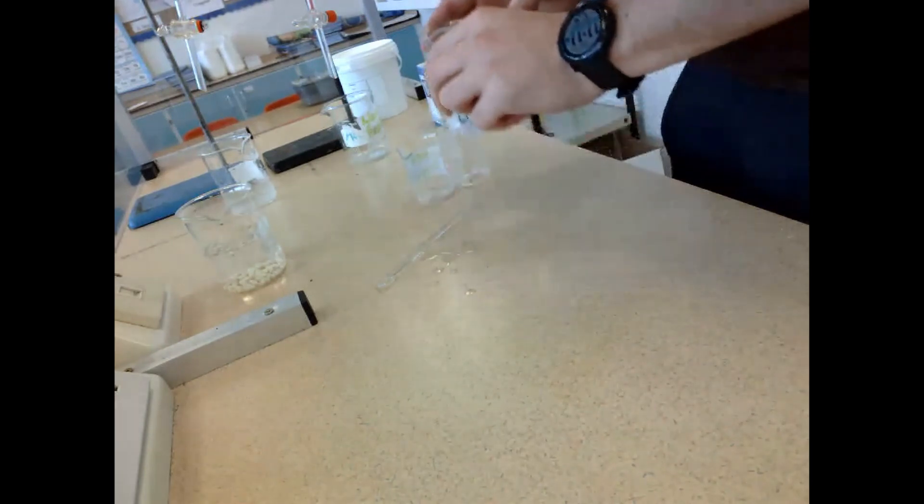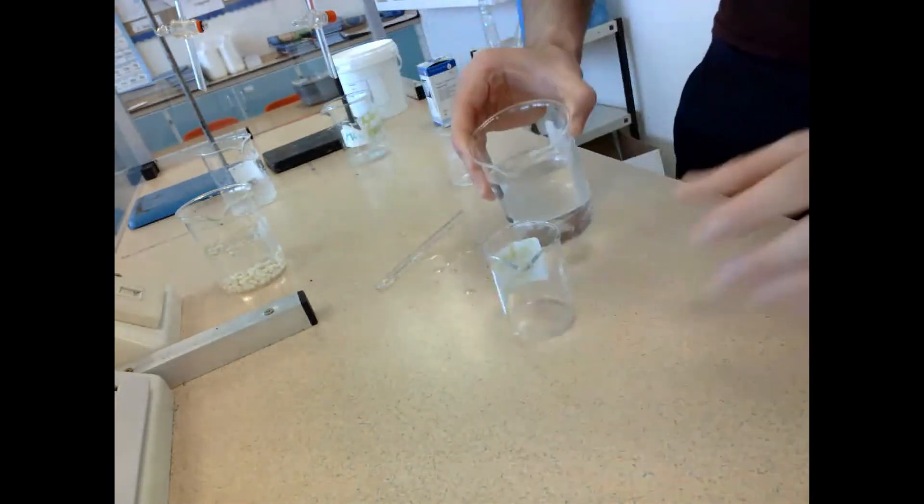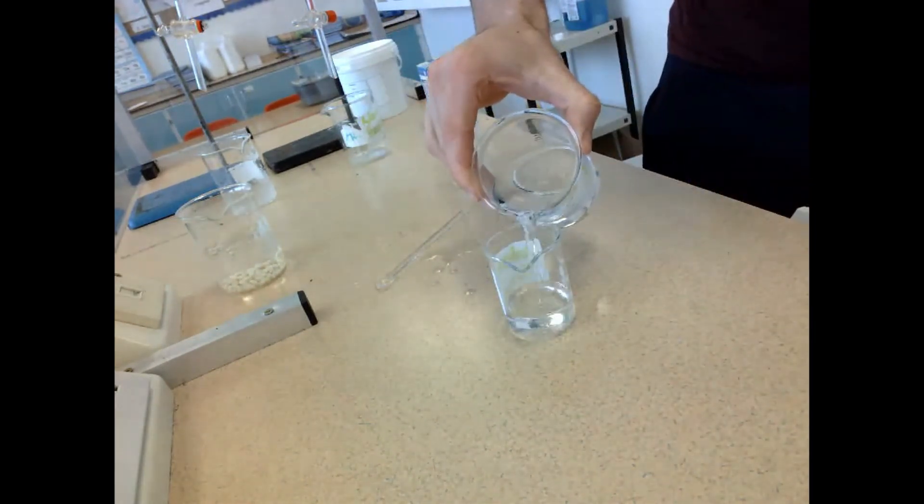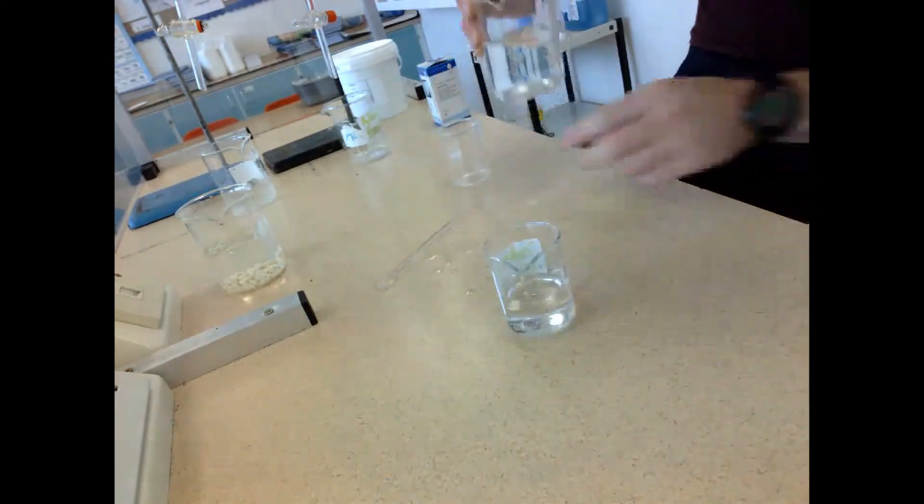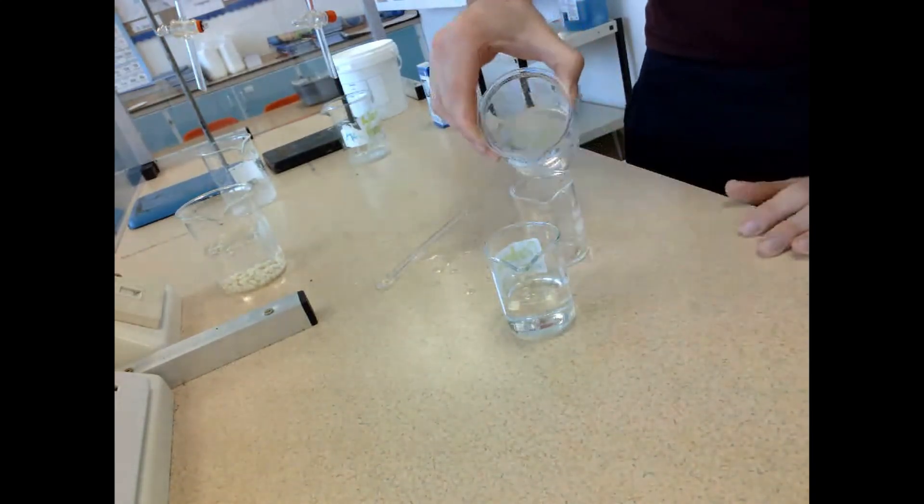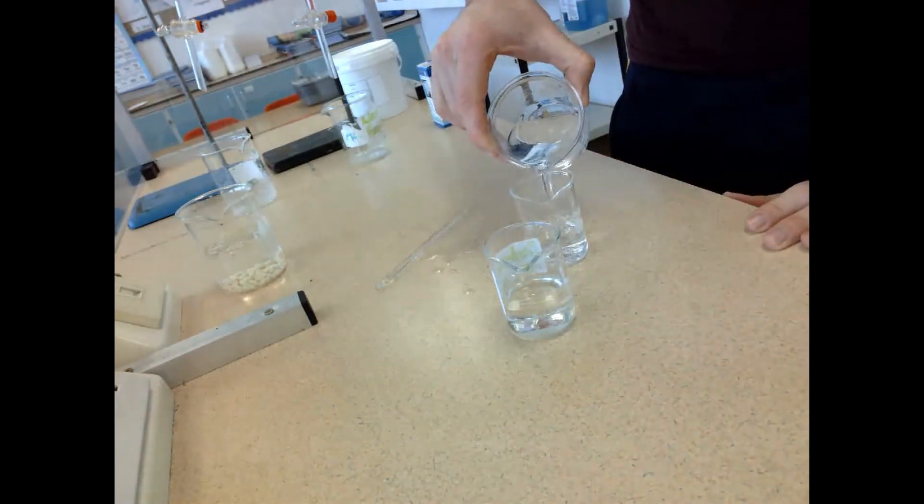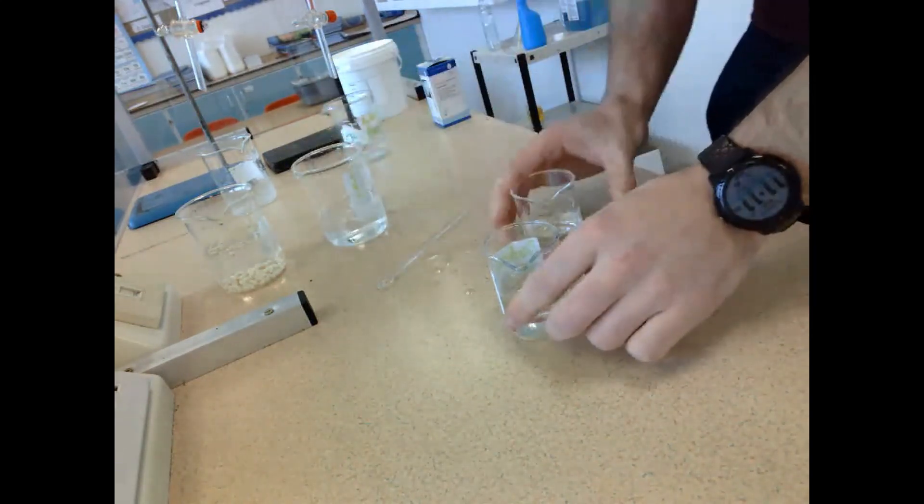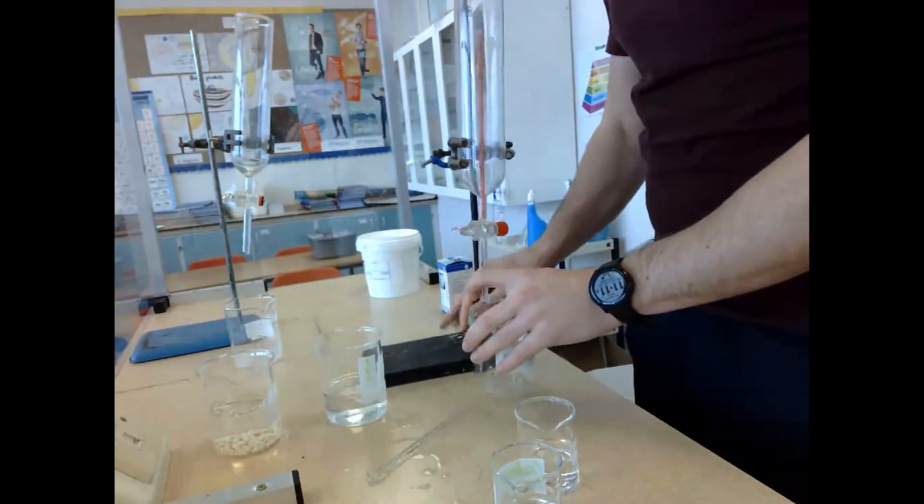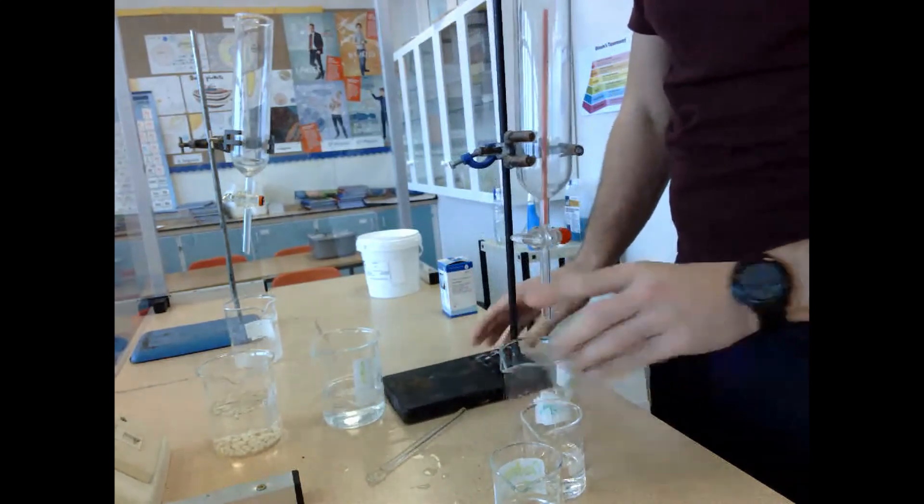While those beads were hardening, I prepared my sucrose solution in the background. I did five grams of sucrose for 500 milliliters of water, and then I just measured 50 milliliters into these two small beakers.